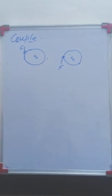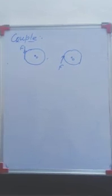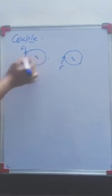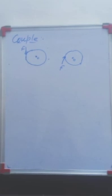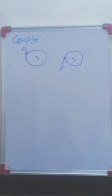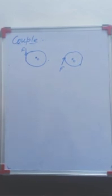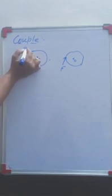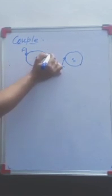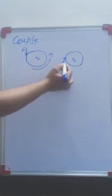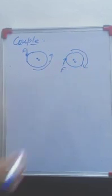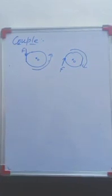We have learned that when a single force is applied on a pivoted body, that means if a body is pivoted at a point and force is being applied, then rotational motion will be produced. The direction of rotational motion depends upon the direction of the force. If the force is applied in one direction the body moves anticlockwise, and if the direction is changed the body moves clockwise.